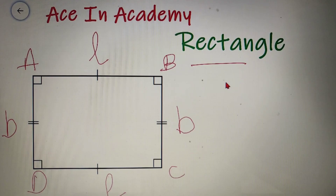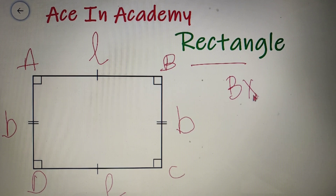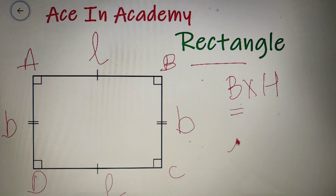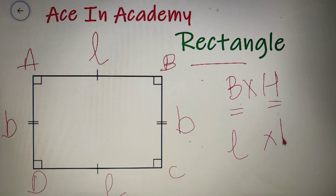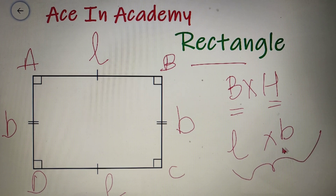The area of a quadrilateral is equal to base into height. For a rectangle, the base is equal to L and the height is equal to B, so the area of a rectangle is equal to L multiplied by B.